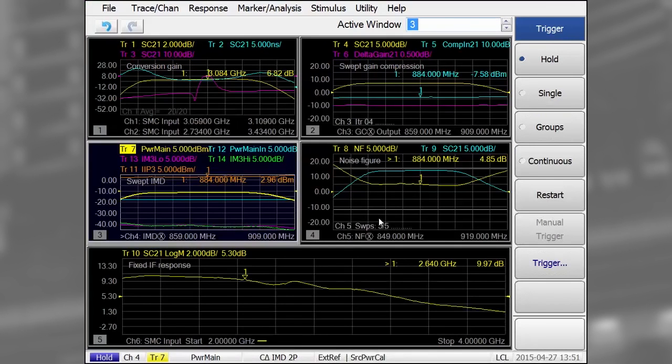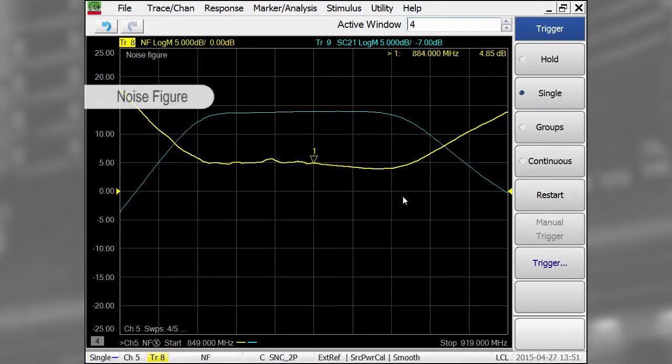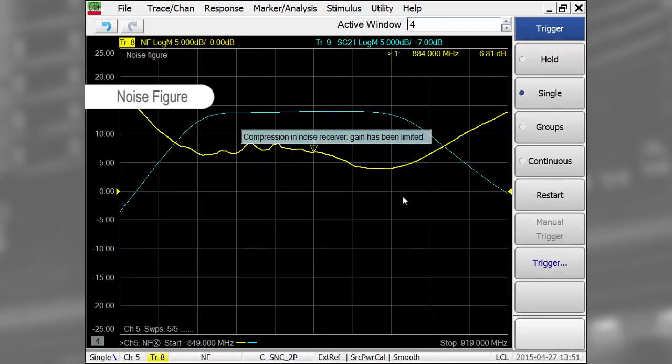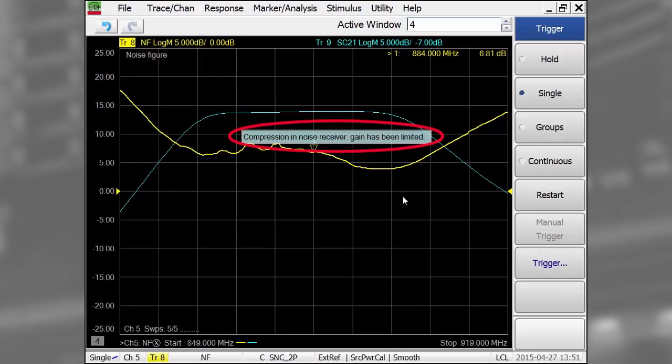So far, so good. However, in my noise figure measurement, I'm getting an error message indicating compression in the noise receiver. This indicates that there is either too much noise power or a spurious signal that is overloading the noise receiver, which can cause bad measurements.